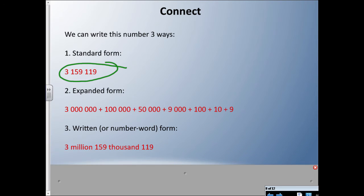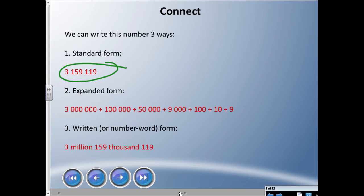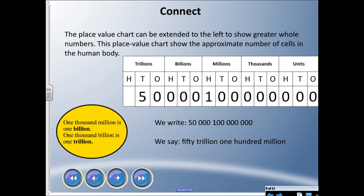There's also word form. I kind of cheated on this one — I used some digits and some words — but it's three million one hundred fifty-nine thousand one hundred nineteen. We probably should write all those digits out in full written form, but I didn't that time.